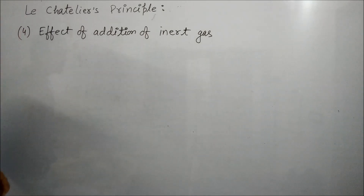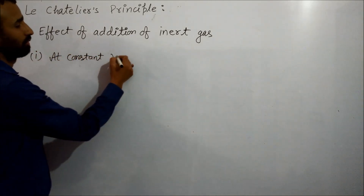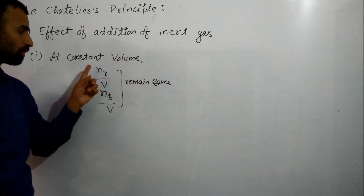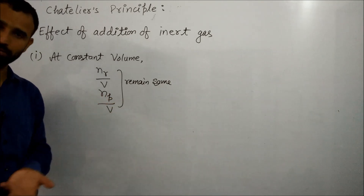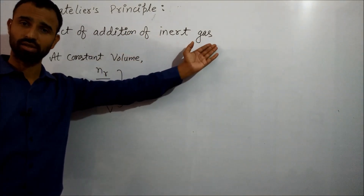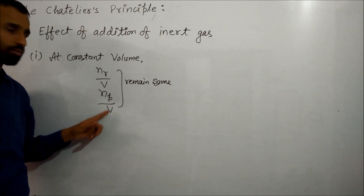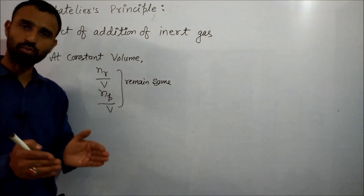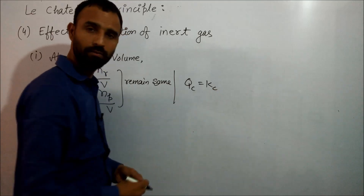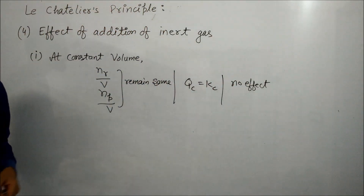The fourth factor is the effect of addition of inert gas. First, at constant volume: when we add inert gas at constant volume, the number of moles of reactant and product remain the same, and volume is constant. Since inert gas has no contribution to reactant or product, the number of moles of reactant and product per unit volume remain the same — meaning concentration of product and reactant remain the same. So Qc remains equal to Kc, and therefore there is no effect of adding inert gas at constant volume.